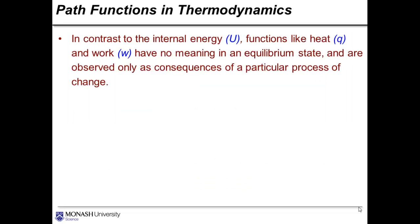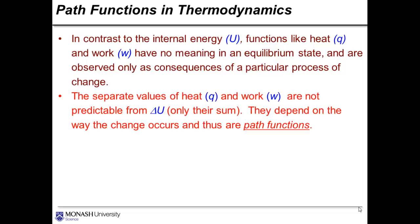In contrast to internal energy and other state functions, functions like heat and work have no meaning in an equilibrium state and are observed only as consequences of a particular process of change. The separate values of heat and work are not predictable from delta U, only the sum. They depend on the way the change occurs, and thus these are a different kind of function, we call these path functions.